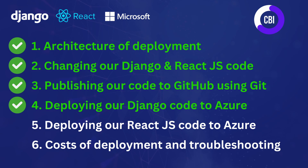In the first one, I explained the architecture of deployments. Next, I showed you how to change your Django code so the deployment will actually work correctly. I showed you how to publish your code to GitHub using Git, and we've already deployed our Django code to Microsoft Azure. But first, we're going to deploy our React.js front-end to Microsoft Azure.